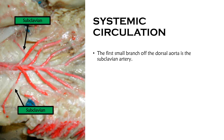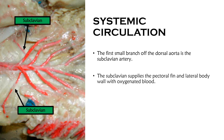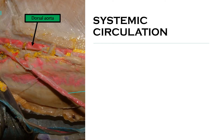The first small branch off the dorsal aorta is the subclavian artery. The subclavian artery supplies the pectoral fin in the case of the shark, and it also supplies the lateral body wall with oxygenated blood.